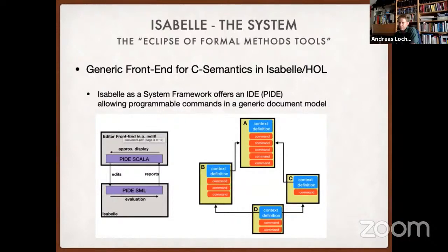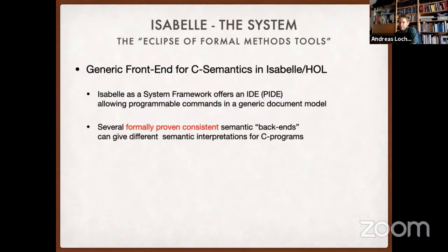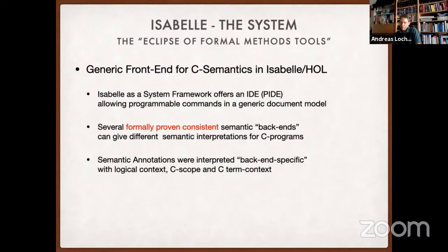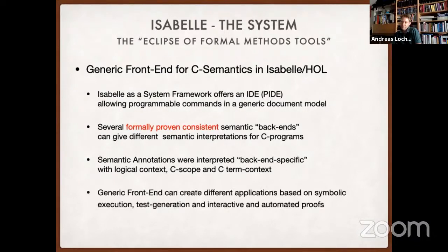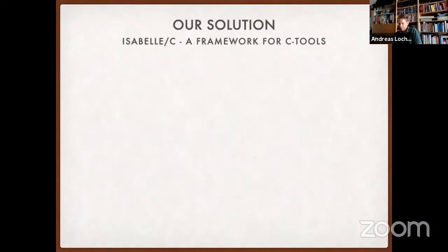There are several formally proven consistent semantic backends already in the Isabelle literature in the AFP. There are mechanisms to define semantic annotations which can be interpreted backend-specific. By the semantic interpretation of a particular C fragment, generic front-end code can create different applications based on symbolic execution for test generation or interactive and automated proofs.